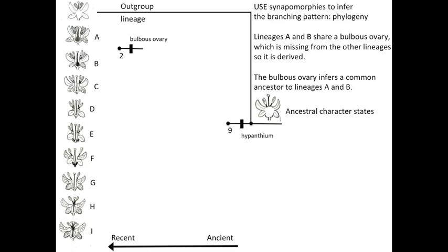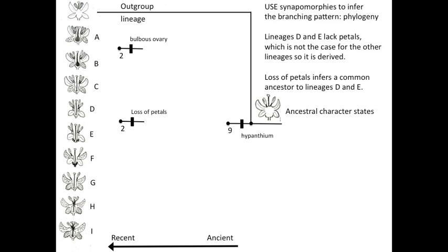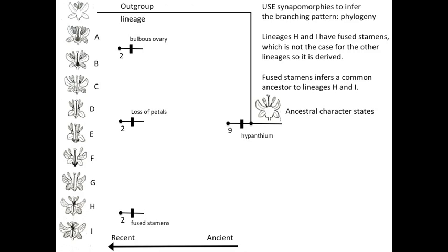Next we see that lineages A and B have a bulbous ovary — the base of the carpel is like a bulb, and no other lineage has this character state. The bulbous ovary infers a recent common ancestor for lineages A and B. Because it is shared between only two lineages, the ancestor is much more recent than the ancestor inferred by the origin of the hypanthium. Lineages D and E are the only lineages that have lost their petals, inferring a recent common ancestor for those two lineages. Lineages H and I are the only lineages with fused stamens, inferring a recent common ancestor for those two lineages.